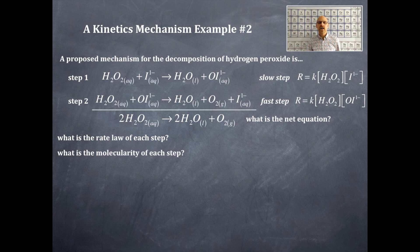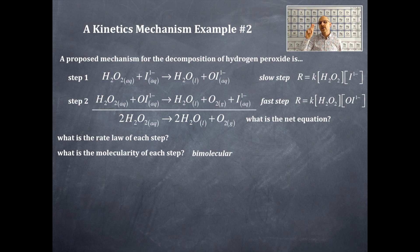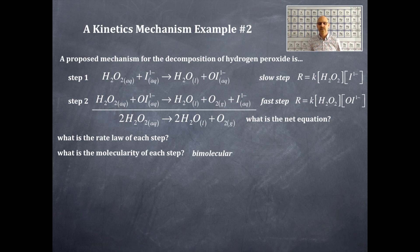What is the molecularity of each step? Both steps are bimolecular. In step one, you have exponents of one and one — summing those gives two. In step two, you also have exponents of one and one — summing those gives two. So both steps are bimolecular events.